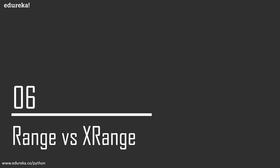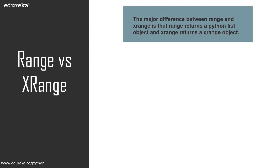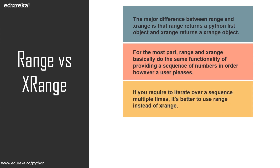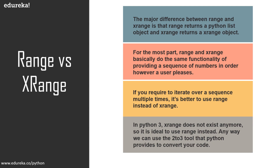What is the difference between range and xrange? The major difference is that range returns a Python list object and xrange returns an xrange object. For the most part they provide a sequence of numbers the same way. xrange does not generate a static list at runtime — it uses a special technique known as yielding, used by an object known as a generator. If you need to iterate over a sequence multiple times, it's better to use range. In Python 3, xrange does not exist anymore, so it is ideal to use range. You can use the tool '2to3' to convert Python 2 code to Python 3.